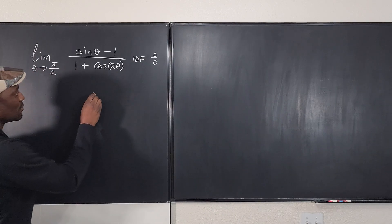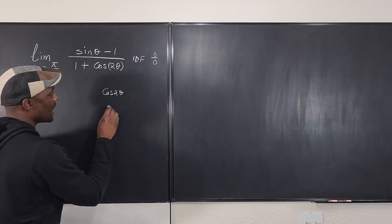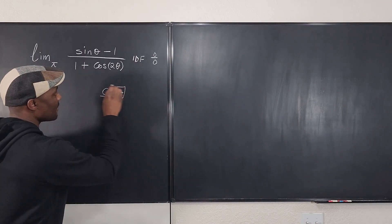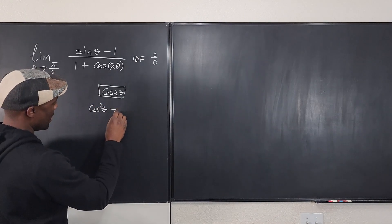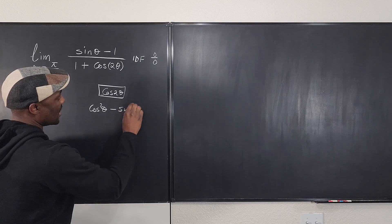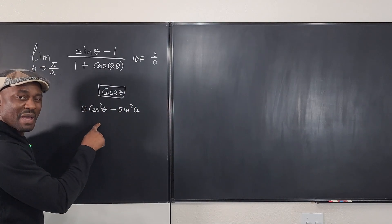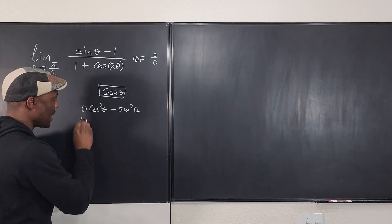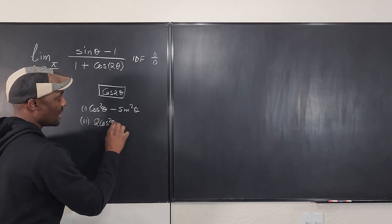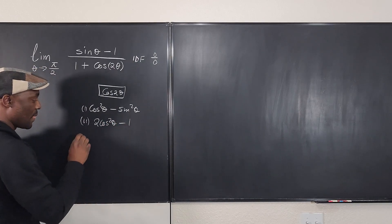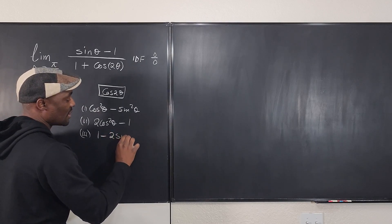So remember that you could write cos(2θ) this way. You can write it as cos²θ minus sin²θ. That's one way you can write it. This you need to memorize. Okay, the second way is it could be 2cos²θ minus 1. Or it could be the third way, 1 minus 2sin²θ.